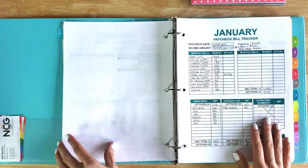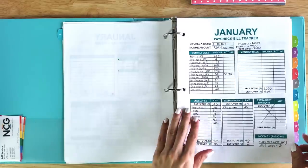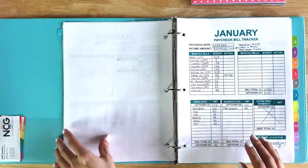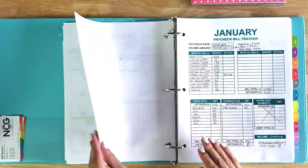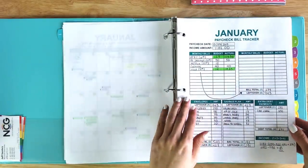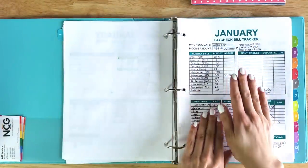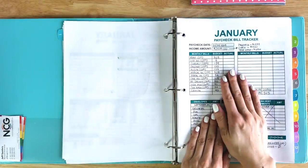This is what my budget looks like for my paycheck on the 20th. I use what's called a paycheck bill tracker, and I do one of these for every single paycheck that I receive. Here is my paycheck on the 5th, and here is the one for the 20th that we're doing the full budget overview for.